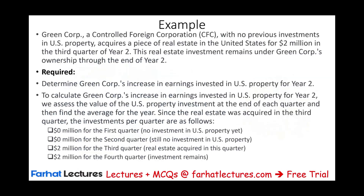The best way to illustrate this is with an example. Green Corp, a controlled foreign corporation with no previous investment in the U.S., acquires a piece of real estate in the U.S. for two million dollars in the third quarter of year two. This real estate investment remained under Green Corp's ownership through the end of year two. To calculate Green Corp's increase in earnings invested in the U.S. for year two, we assess the value of the property at the end of each quarter. First quarter: zero. Second quarter: zero. Third quarter: two million. Fourth quarter: two million.